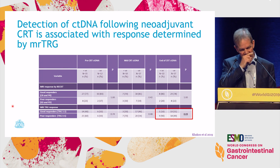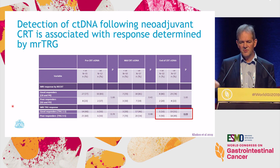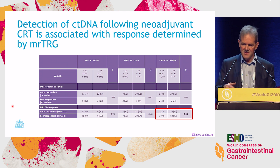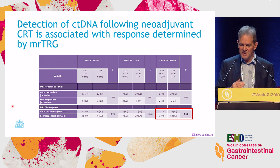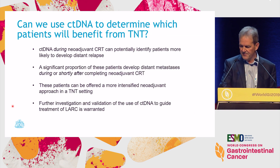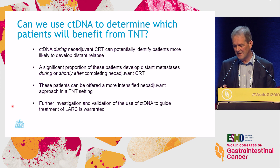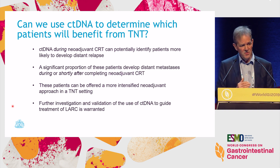We actually showed within this research that when you look at tumor regression grade determined by MRI — including the intensity of the tumor on MRI — the TRG does actually correlate with the clearing of the ctDNA. So ctDNA could be a useful tool to further inform us how we should use TNT, because those people who have circulating DNA after chemo-rad do badly and could be offered further intensified treatment.